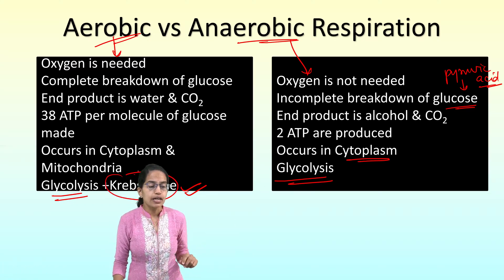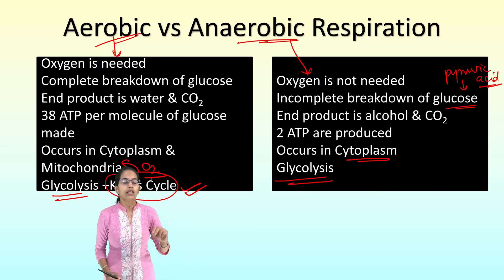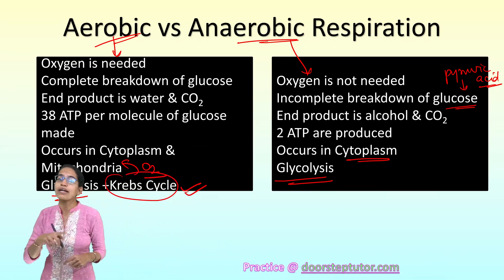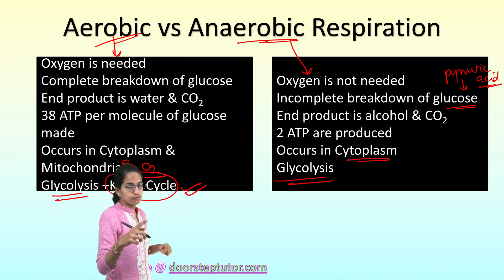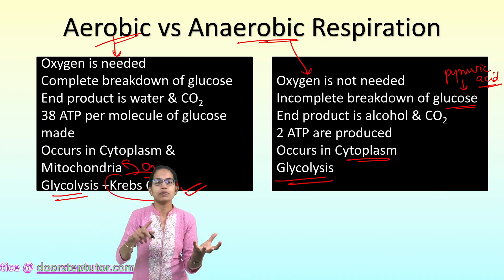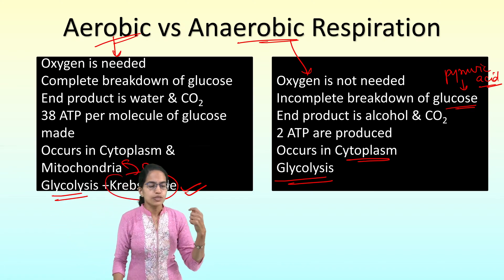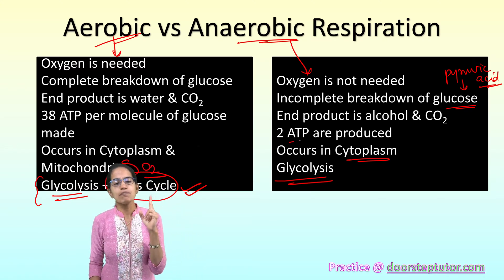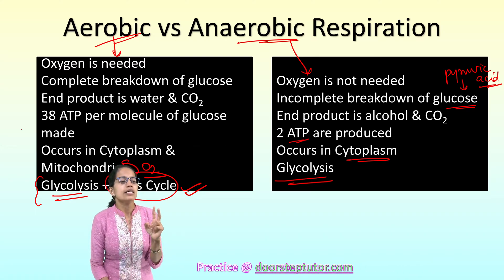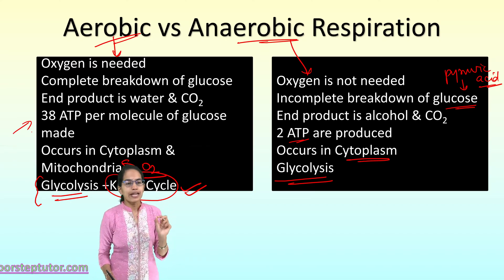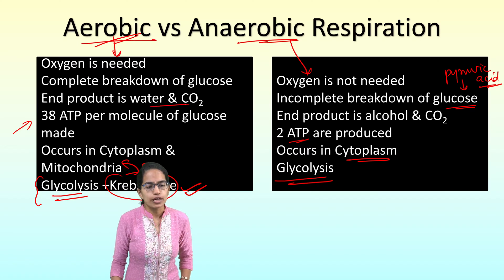The Krebs cycle occurs in mitochondria and requires oxygen. So aerobic respiration requires both the cytoplasm where anaerobic respiration takes place and the mitochondria where the aerobic respiration takes place. Together they form the complete process of respiration. Energy released in anaerobic respiration is simply 2 ATP, much less than the 38 ATP per molecule of glucose released in aerobic respiration. The end product of aerobic respiration is water, carbon dioxide, and energy stored as ATP.